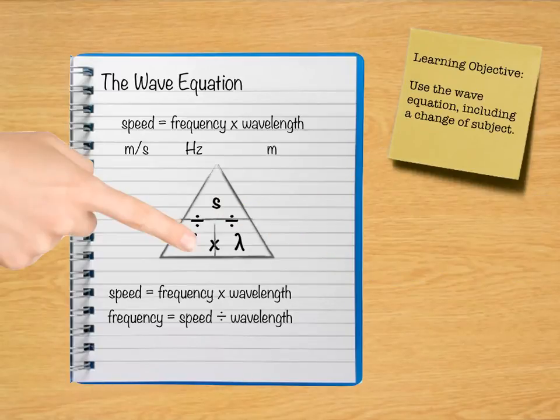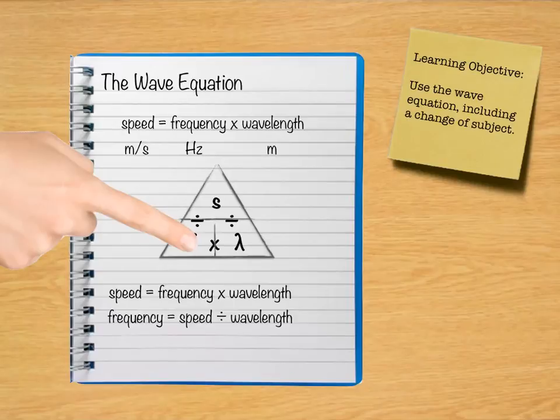I'll use the same routine in order to make frequency the subject of my equation. If I cover over frequency with my finger then I get speed divided by wavelength.